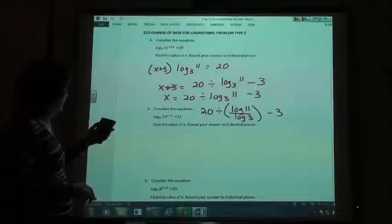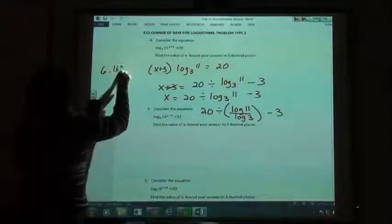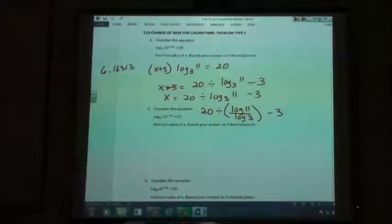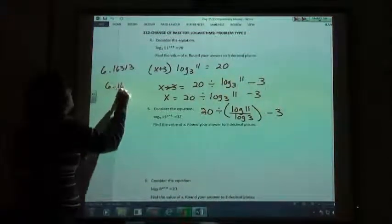And what are we getting? We got 6.1631382. Rounding it off to three decimal places, then we would put what for our answer? 6.163. Exactly.